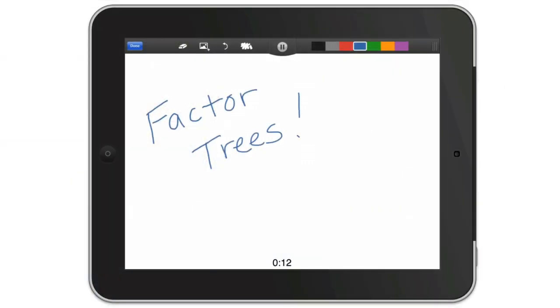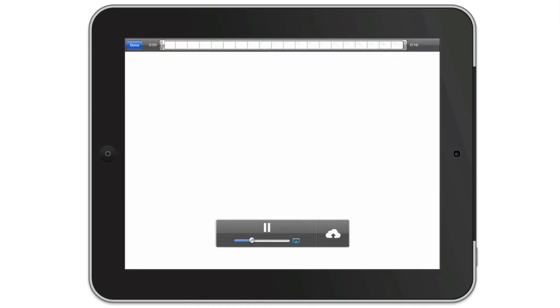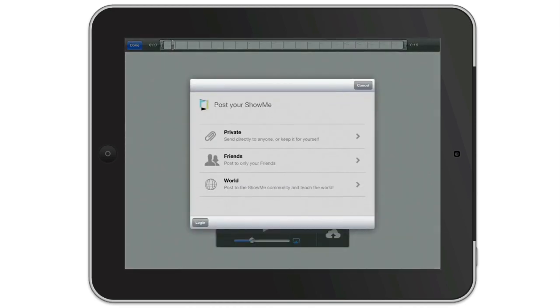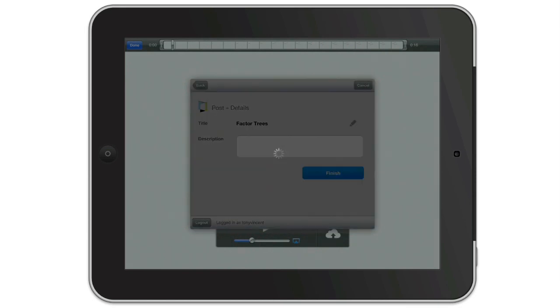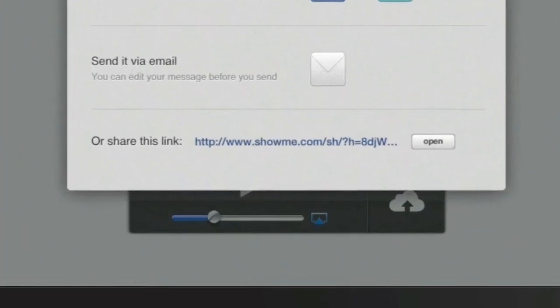The iPad app Show Me Interactive Whiteboard is a great app for teaching concepts through video. Everything you write and say are combined into a video that's uploaded online. After the upload, the video has a URL. So, of course, that URL can be copied and pasted into a QR code generator. Codes to teacher and student-made videos can be a great tutorial, reference, or extension to an assignment.